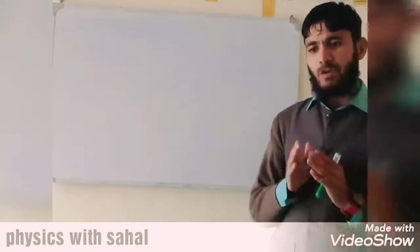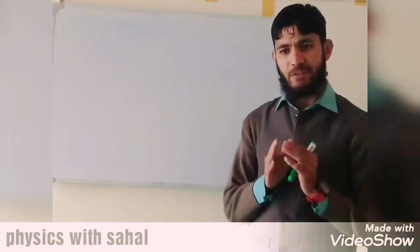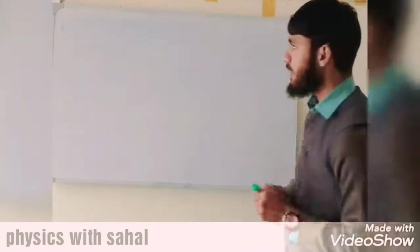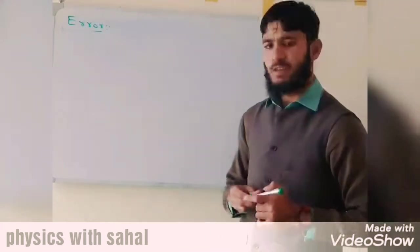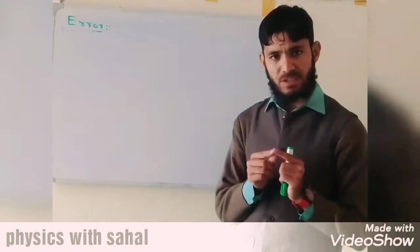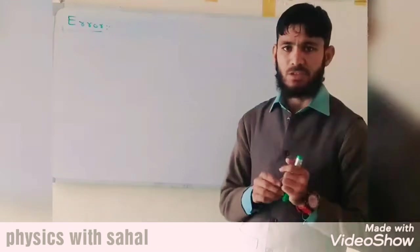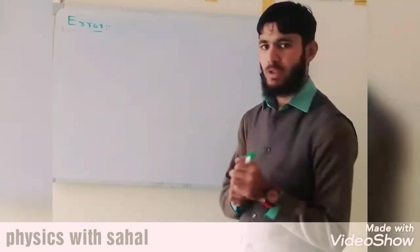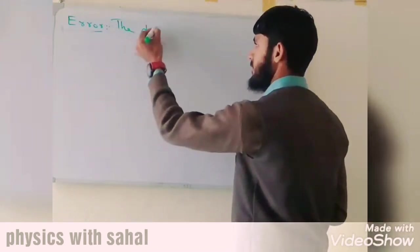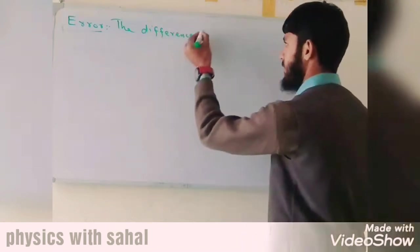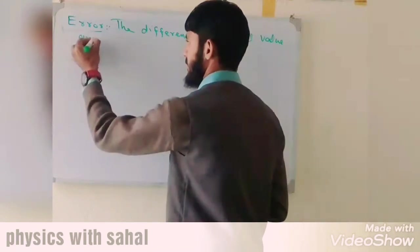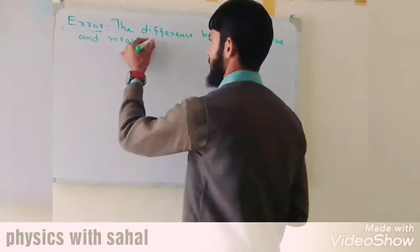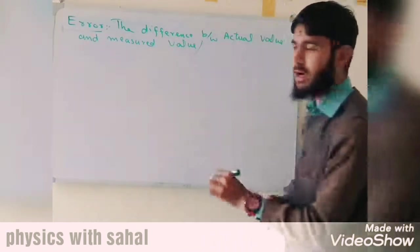Welcome back to a new lecture. Today we will discuss error when we perform experiments. There is a little difference between our values, for which we use the term error. In physics, there are two types of values: one is the actual value of an object, and the other is the experimental value. The measured value is also called the calculated value.